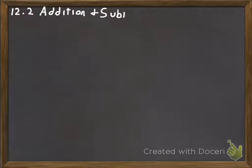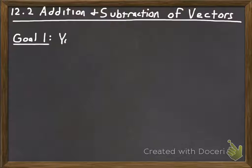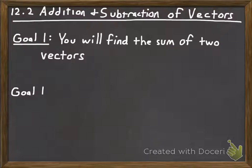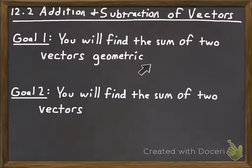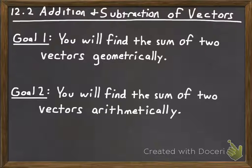Let's get started — we're in section 12.2, learning about addition and subtraction of vectors. There are two goals: the first is finding the sum of two vectors geometrically, and the second is finding the sum of two vectors arithmetically. So we'll approach finding the sum or difference of two vectors from both a geometrical standpoint and an arithmetic standpoint.